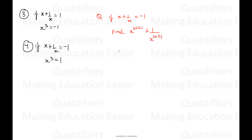First of all, what is the result? We know that whenever X plus one by X is equal to negative one, X cubed equals one. So X cubed value is one. Now, to simplify, let us see which is the nearest multiple of three to 2001. 2001 is itself a multiple of three — three times 667 is 2001. So we can write X to the power 2001 as X cubed whole to the power 667. Since one to any power is one, we'll be left with X squared in the numerator and X squared in the denominator.